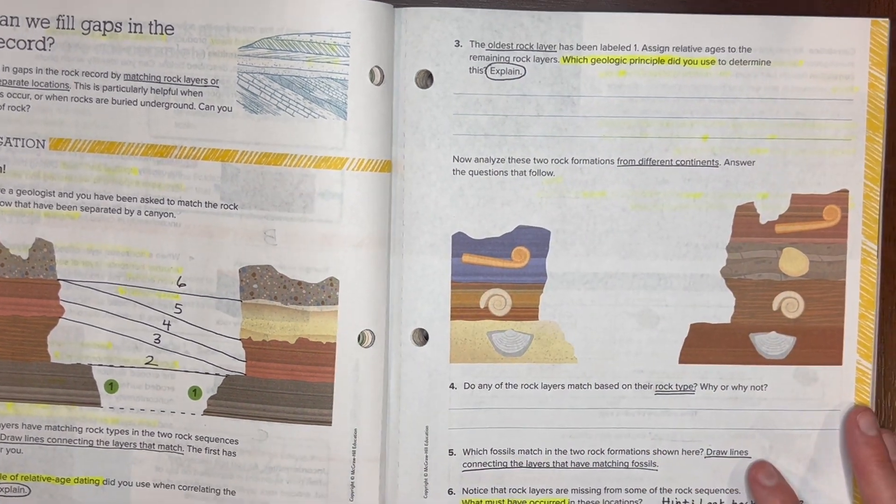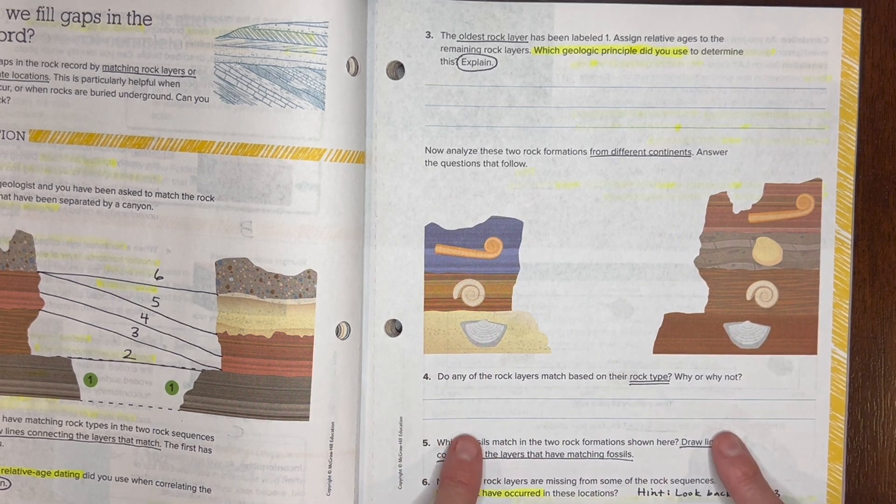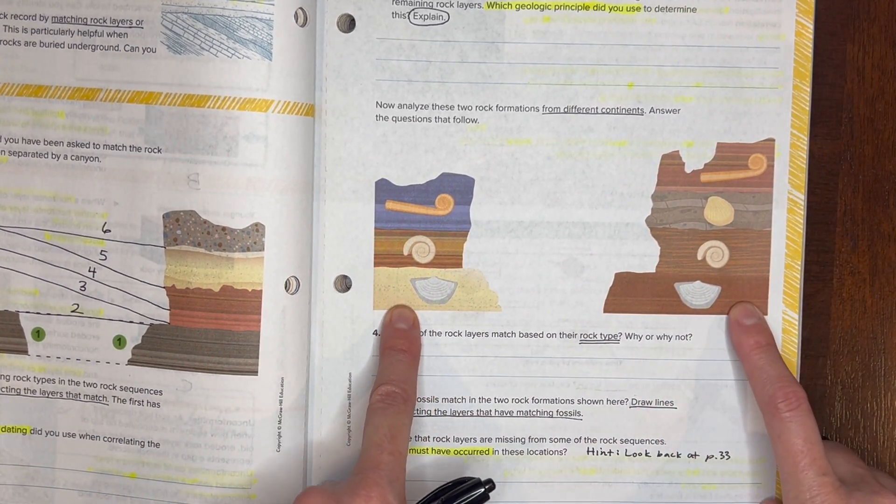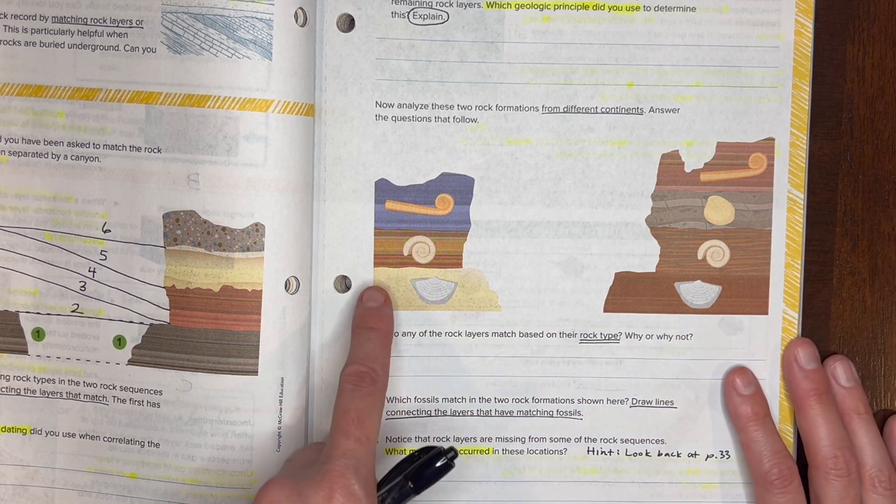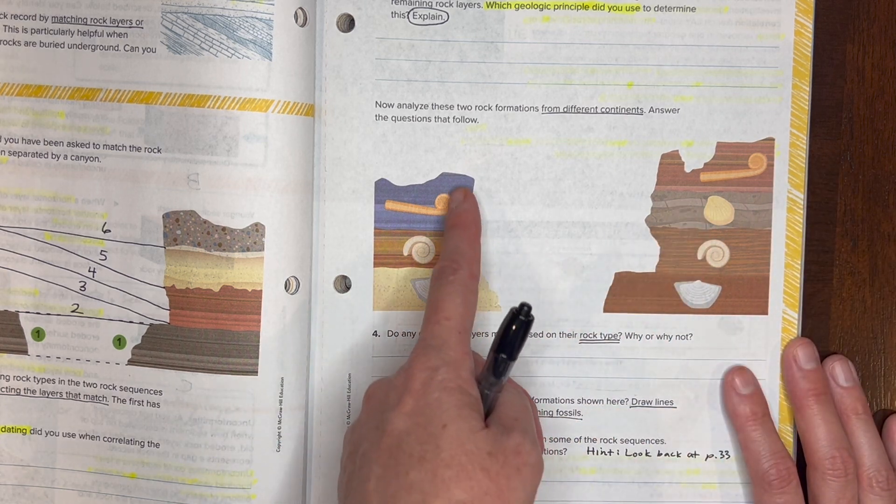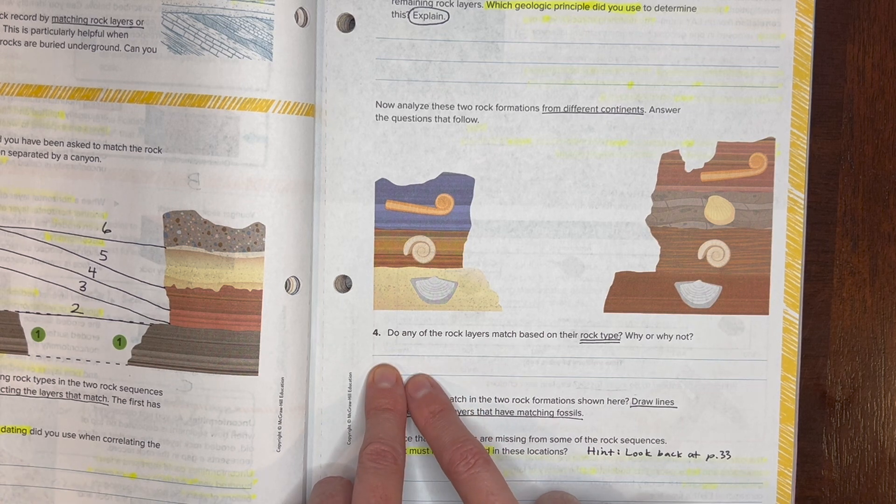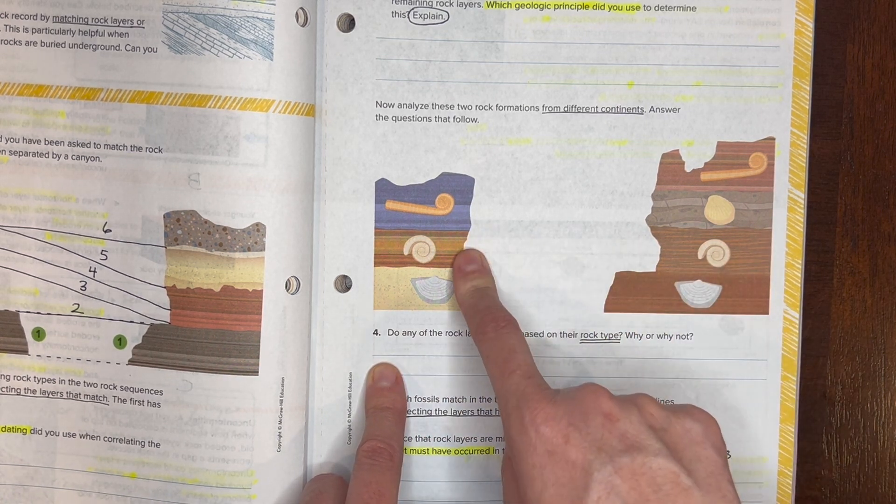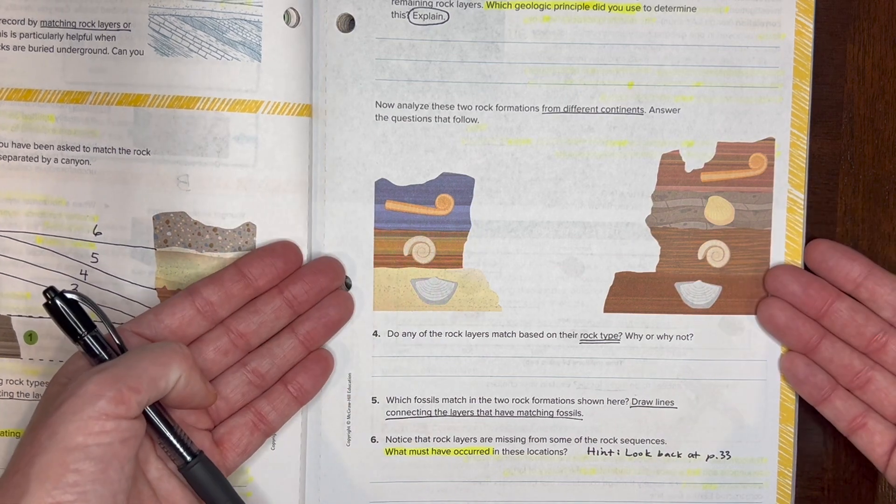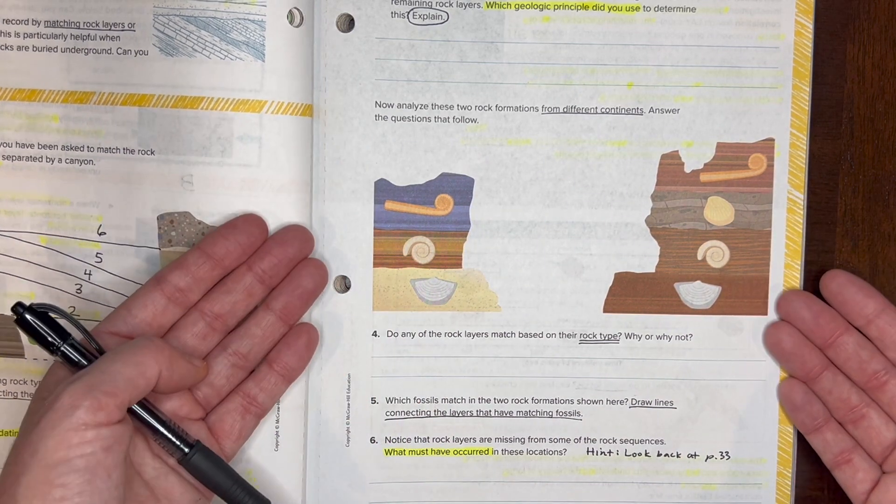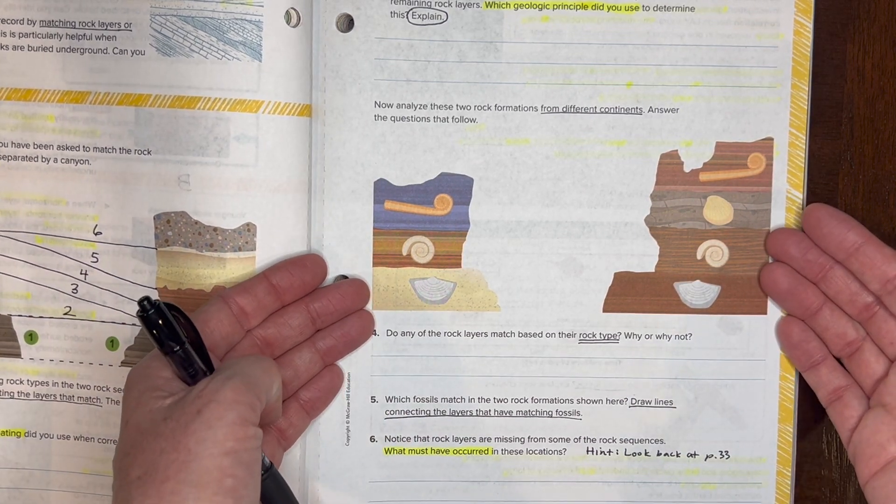Now let's go ahead and look at some rocks over here. Let's pretend that these rocks are from two different continents. Let's look at the rock types, are any of these rock types similar? Got some lighter color here but there's no lighter color over here. There's these colorful stripes but none over here, and a purpley one but not over here. Looking at the rock types, none of them match up. So write that down for number four. None of the rock types seem to match up. They're just not the same types of rocks, probably because they're from different continents.